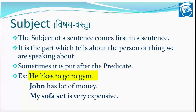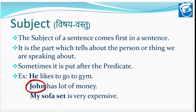Next we have: John has a lot of money — John ke paas bahut paisa hai. John ek vyakti ka naam hai, aur that is the reason John is acting as a subject in this sentence.